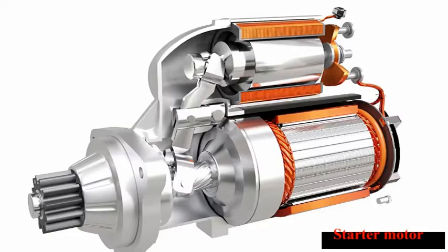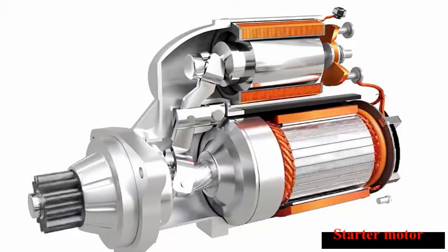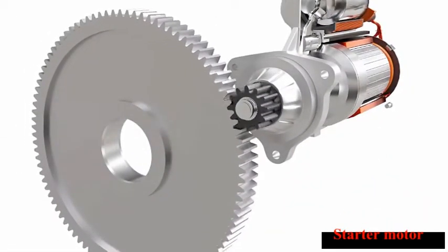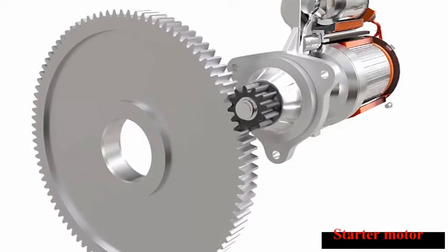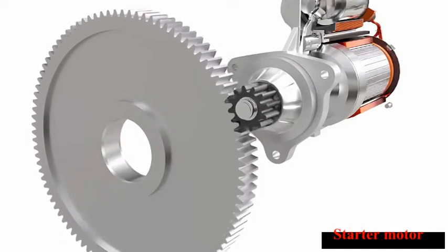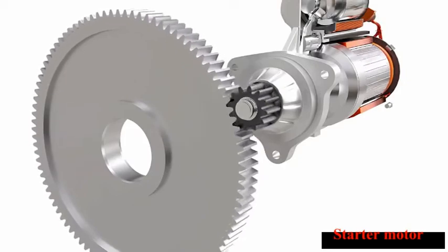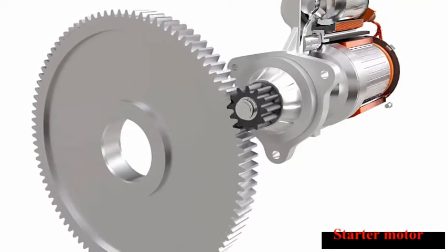As the pinion and flywheel are properly meshed, the contactor switch gets closed and the motor spins. As we can observe, the pinion is considerably small compared to the flywheel. The gear ratio of the flywheel and pinion is generally from 15 to 1 to 20 to 1. The high torque obtained from this gear reduction is still insufficient to crank the engine.